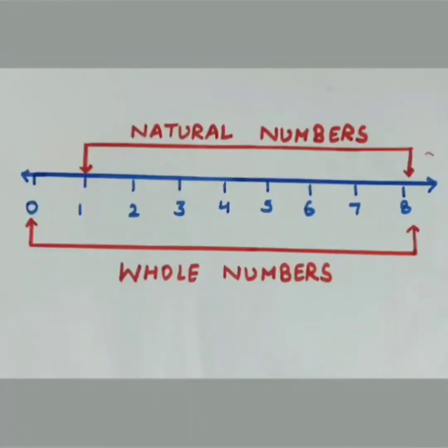Today we have understood the concept of natural numbers and whole numbers. I have shown the concept on a number line, taking positive values from 0 till 8. From 0 onwards till 8 are whole numbers, and from 1 onwards till 8 are natural numbers, as natural numbers start from counting numbers i.e. from 1 onwards.